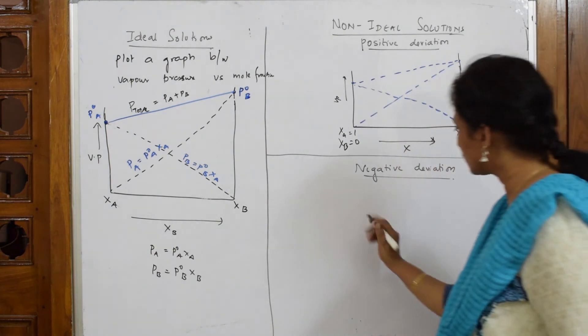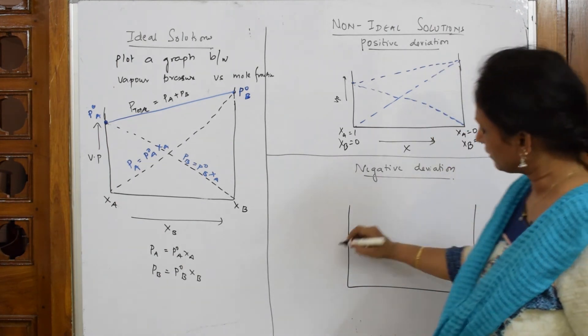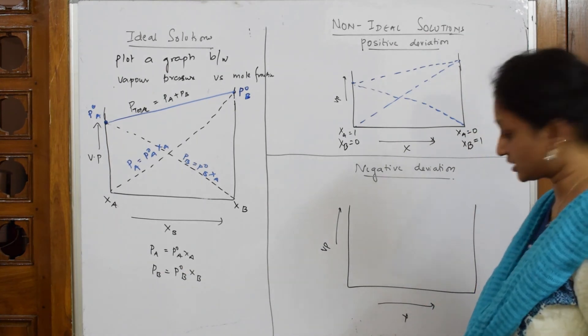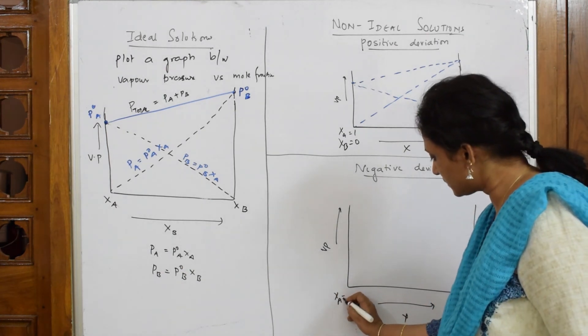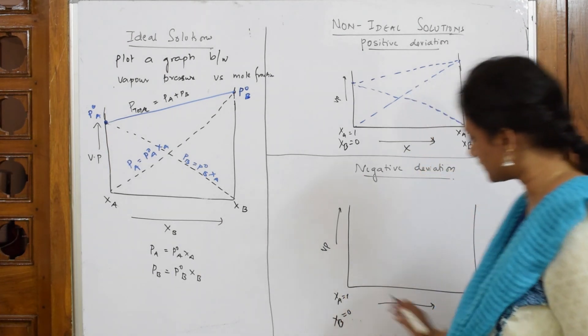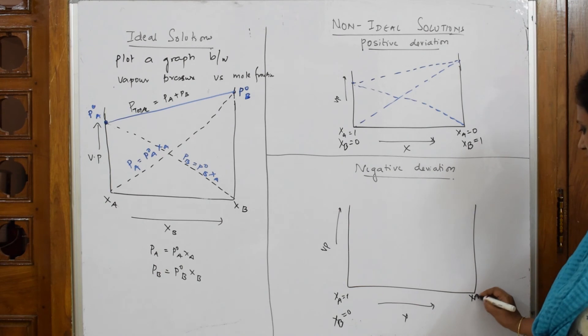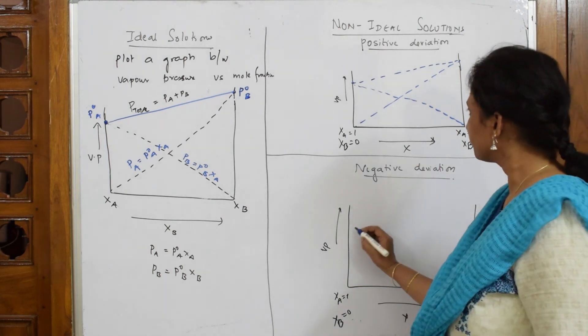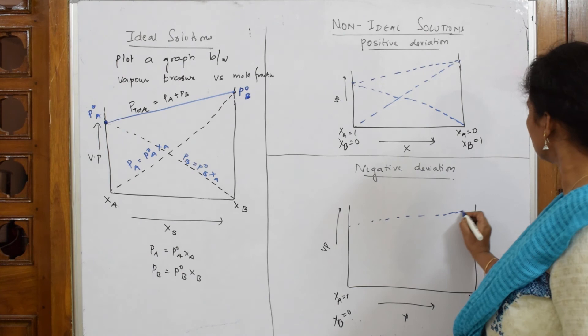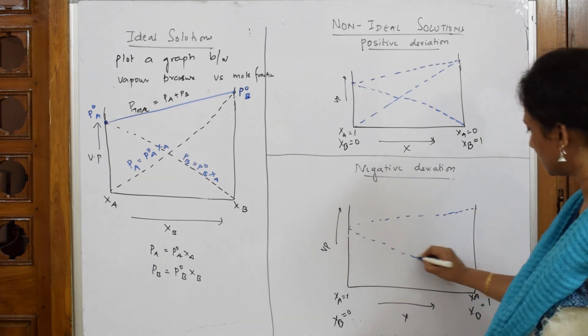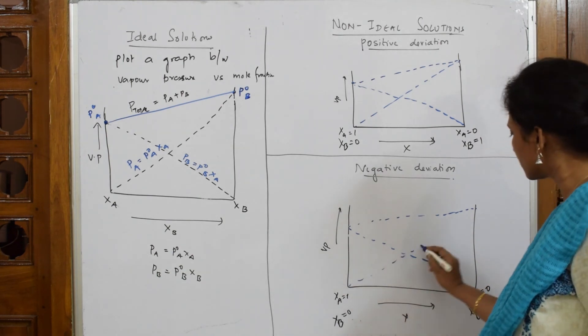Let us come back and draw for this also. Y-axis is always vapor pressure, X-axis is always mole fraction. XA will always be initially 1, XB will be 0 because it still has not vaporized. Here, XA will become 0, XB will become 1. Now, again make ideal solution curve which is obeying Raoult's law above. This will be above. And join this line here. Join this line here.